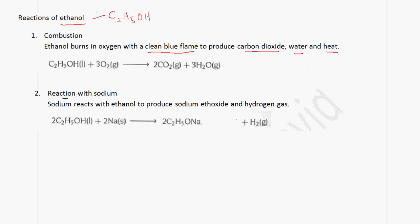The next reaction we're going to look at is the reaction with sodium. Sodium reacts with ethanol to produce sodium ethoxide and hydrogen gas. Let's draw what is happening here — we have ethanol, this is the displayed formula for ethanol, and we're going to react it with sodium.